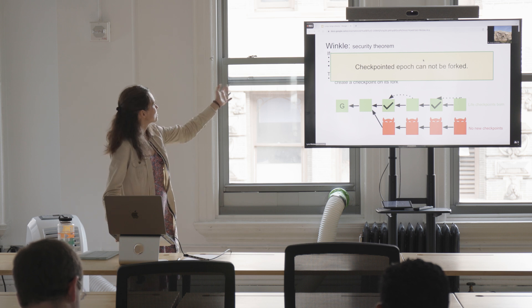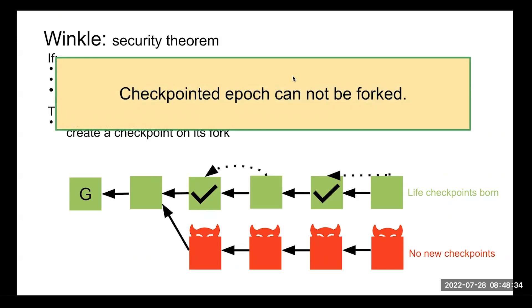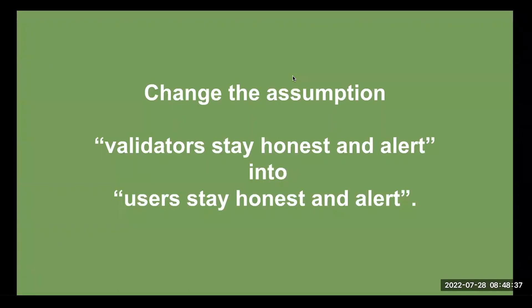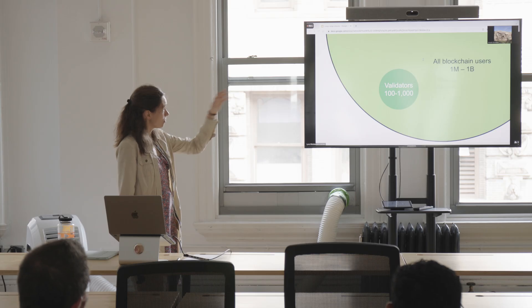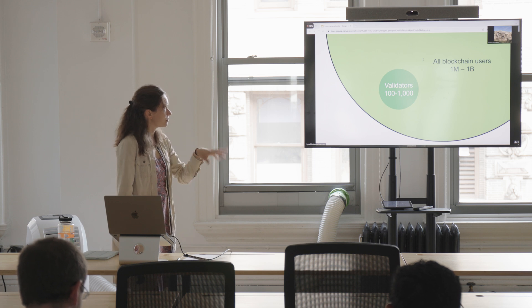To summarize the security theorem: checkpoint epochs cannot be forked. We're changing the assumption — instead of relying on validators staying honest in perpetuity, we now rely on users staying honest and alert. The validators are typically up to one or two thousand, but blockchain users can run from a million to a billion. It's a much bigger population, with many more keys protecting users' funds rather than just validating keys.